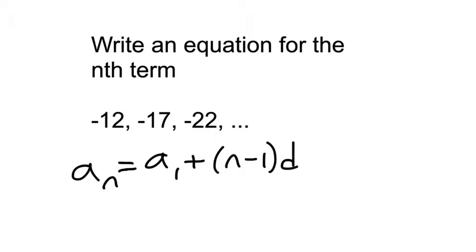It's this form here where d is the common difference and a sub 1 is the starting term. So we start on negative 12. The n has to stay in because you need a variable. n is like the number that you plug in to help you find whatever term you're looking for.